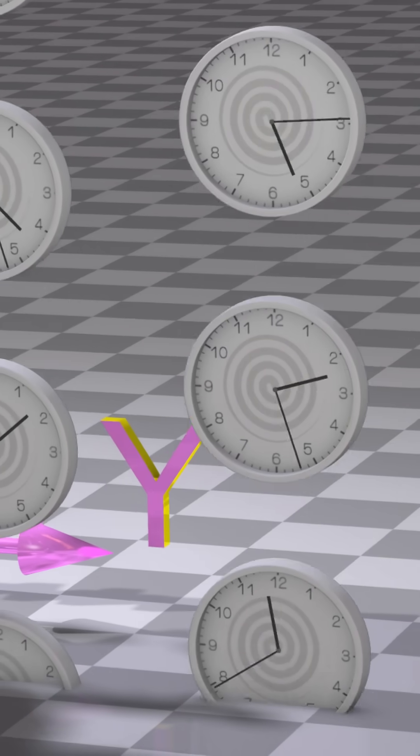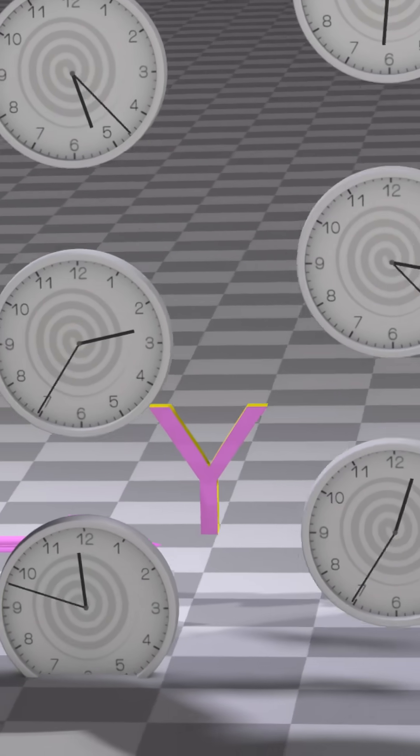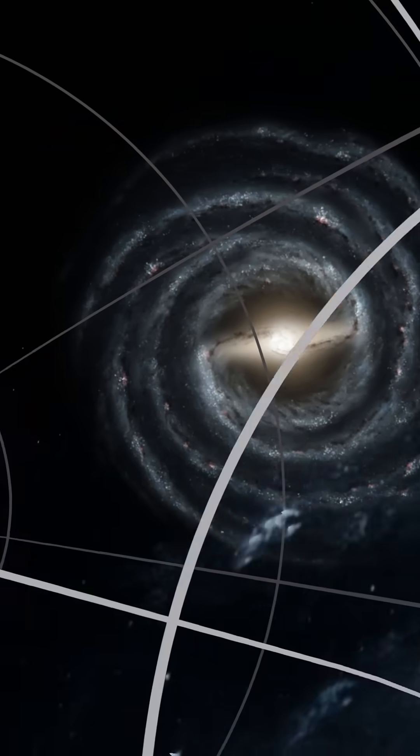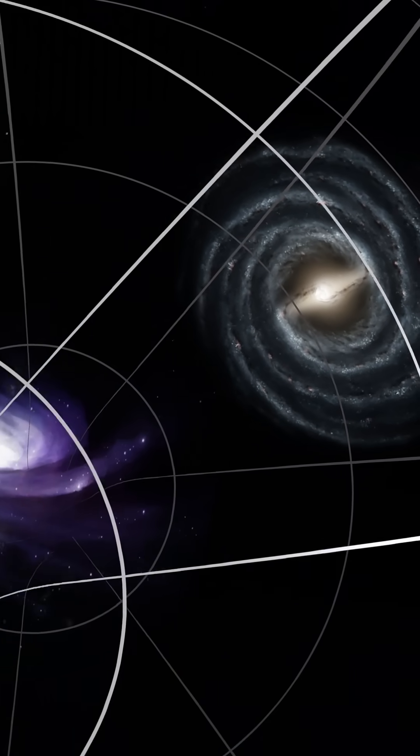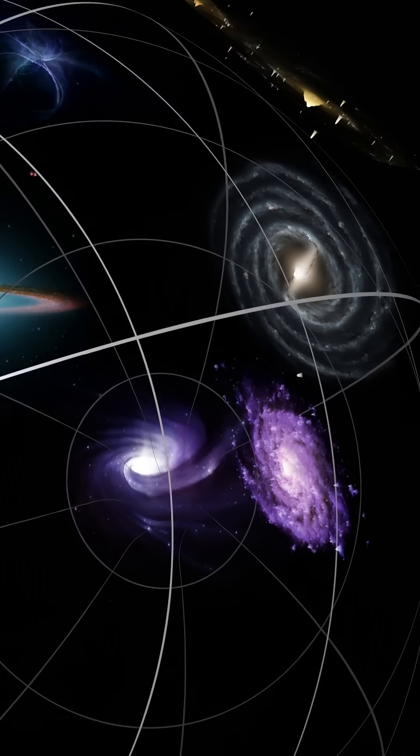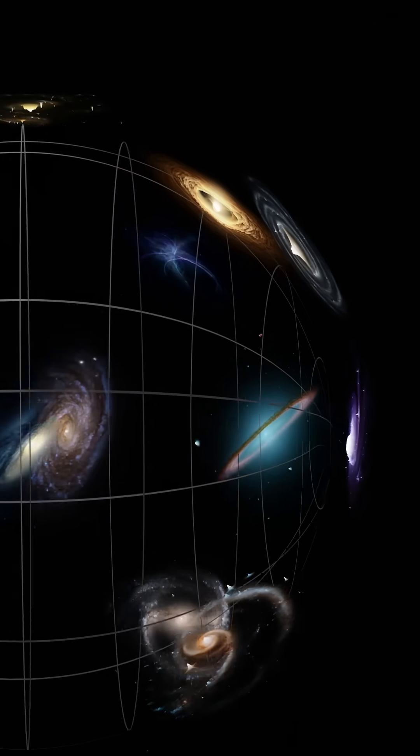One proposal was made by Kurt Gödel. This requires a rotating universe with a negative cosmological constant to balance out the rotation and keep the size of the universe constant.